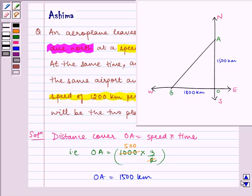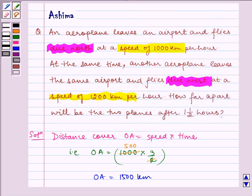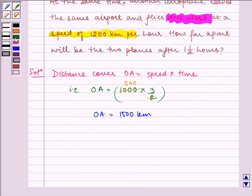Now, let us consider the second aeroplane which starts from O at the same time but goes up to B towards west where distance covered OB is equal to speed into time.